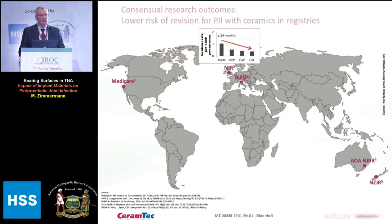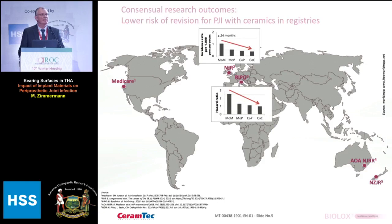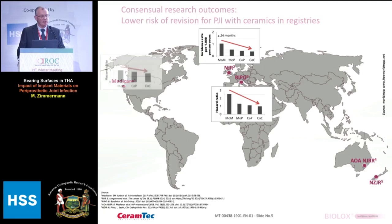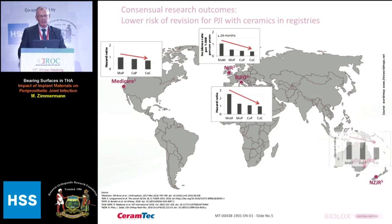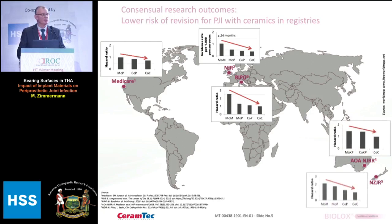The same kind of results have been shown in Italy based on registry data, showing exactly the same tendency — a decreased risk of infection when using ceramic components instead of metal components, specifically metal-on-metal. Steve Kurtz in the USA also showed, based on Medicare patients, that having ceramic materials instead of metal reduces the risk of PJI. The same tendency has been observed in registries from Australia and New Zealand.